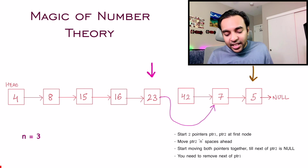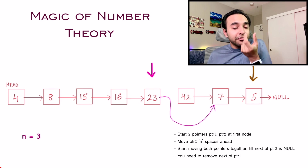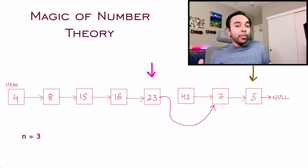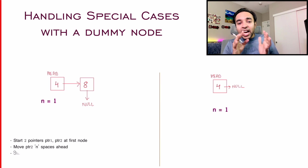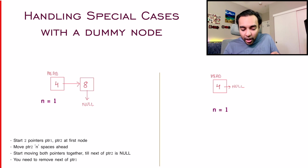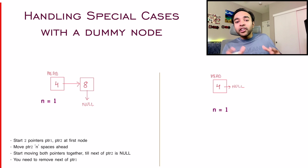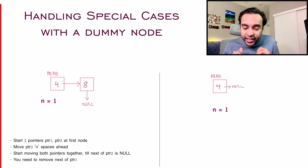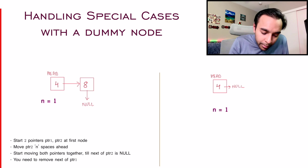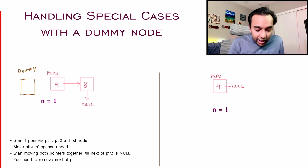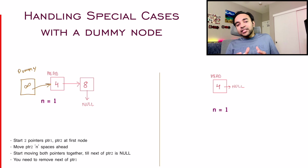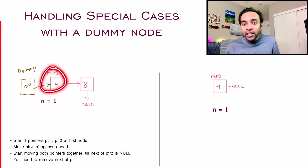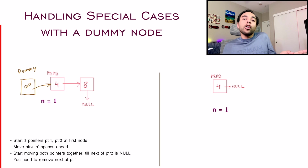The only other doubt you might have is about edge cases — what happens if the linked list is very small or has just one element? Won't it go out of bounds or require special handling? That is where I always take the help of a dummy node. I always advise that when you are dealing with linked list problems, take the help of a dummy node — because a dummy node is something you can easily discard at the very end when you're done with it. The idea is: just create a dummy node, assign the next of the dummy node to your head. When you're done with all of the iterations, just return dummy.next. That way you will always preserve your head value.